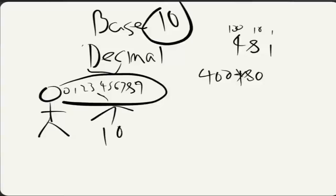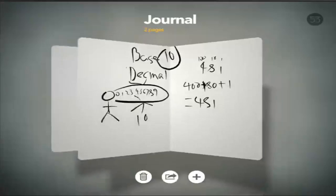Sorry — plus those together, not times. And then we add 1 times 1, which is 1, to get our number 481. Pretty simple, right? And we should all know this. So I want to start off by saying computers are different. Unlike us humans, or English-speaking humans, they use Base 2, or mostly known as Binary.